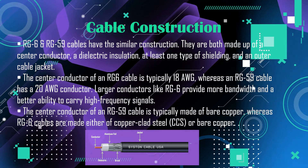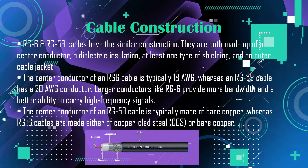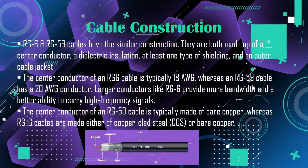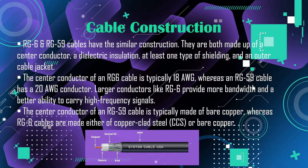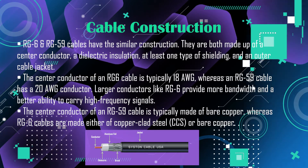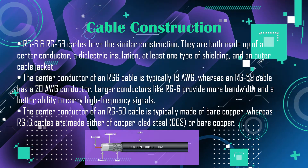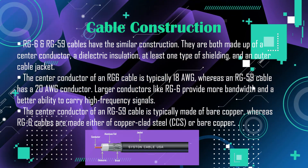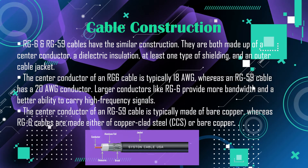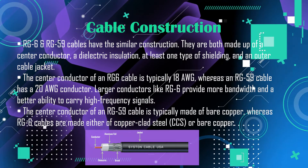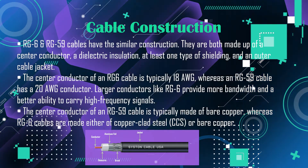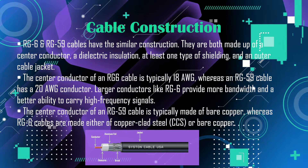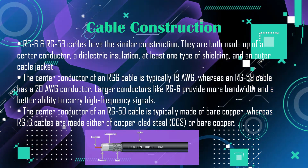Larger conductors like RG6 provide more bandwidth and a better ability to carry high frequency signals. The center conductor of an RG59 cable is typically made of bare copper, whereas RG6 cables are made either of copper clad steel or bare copper.